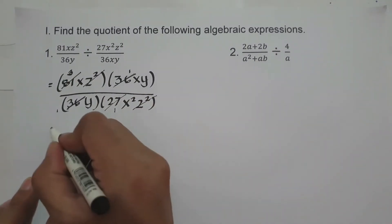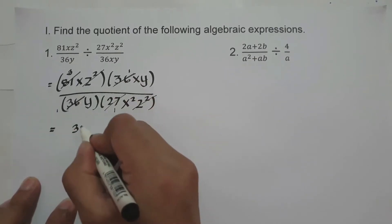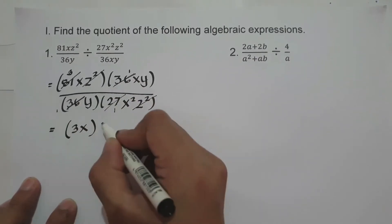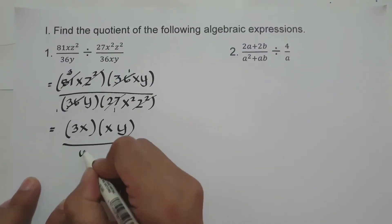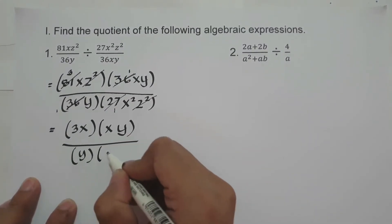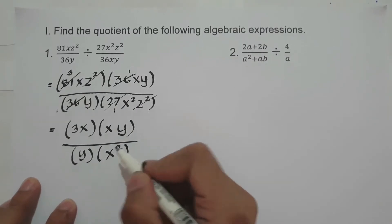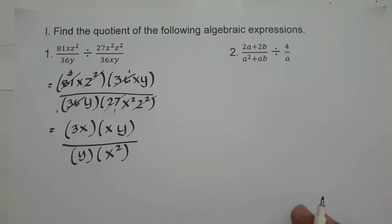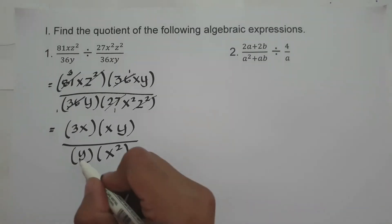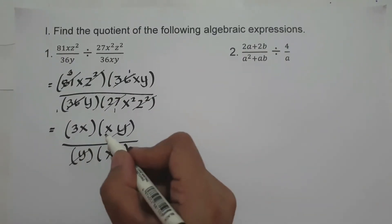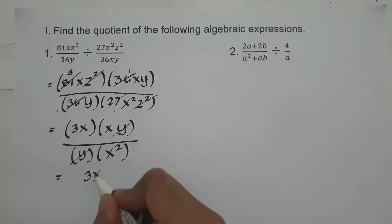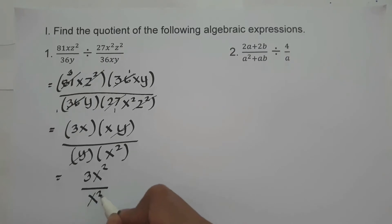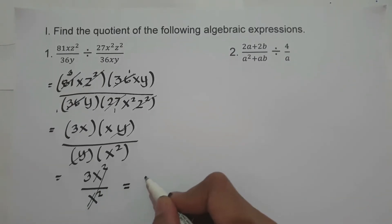So let's write our answer. We have 3, then x times xy over y times x squared. So 3x times x is 3x² over x², then let's cancel x². So the final answer is 3.